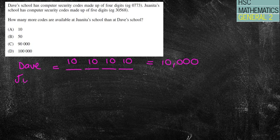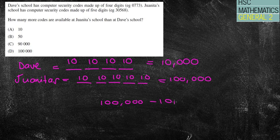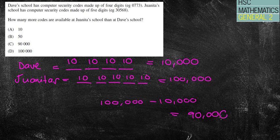At Yuanita's, she has five digits. Again, you can have 10 in all of those, which will give you 100,000 options. So if it says how many more codes are available, I'm going to subtract 10,000 from 100,000 and that leaves me with 90,000 combinations, which in this case would be C.